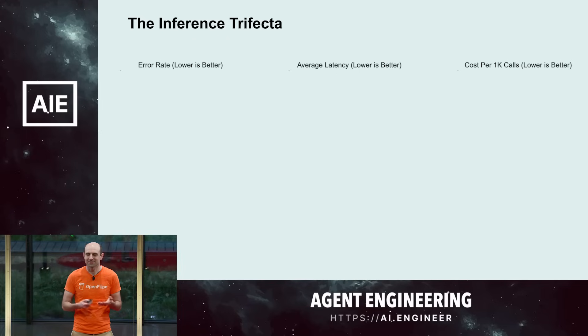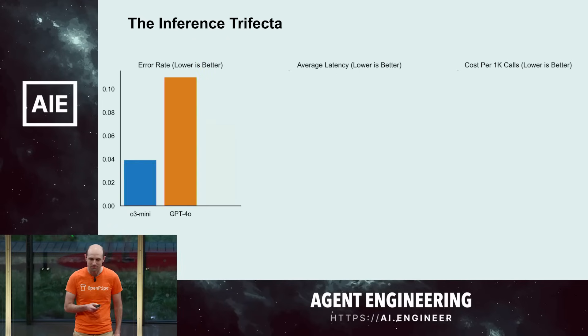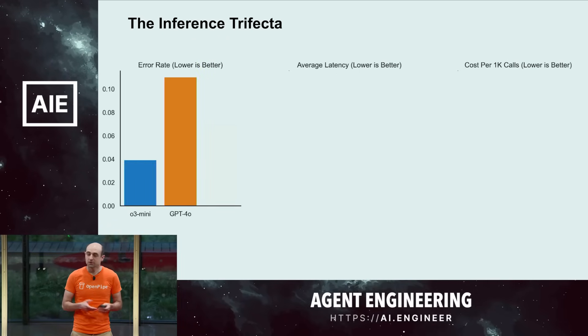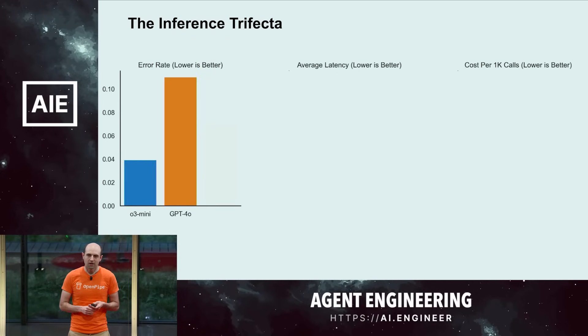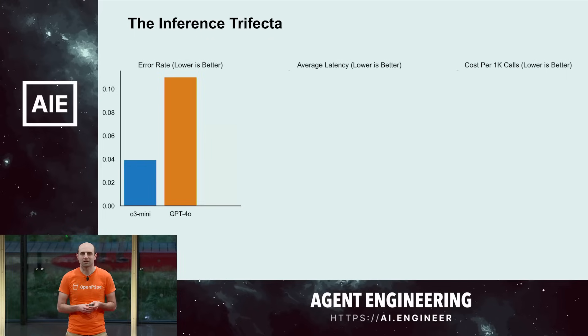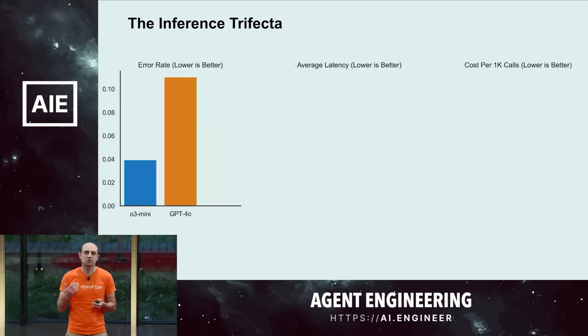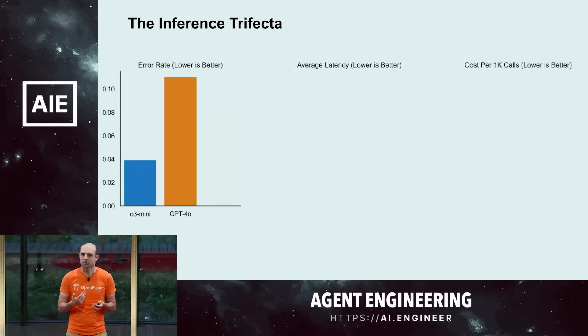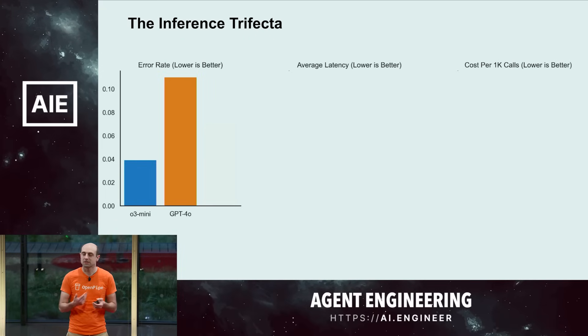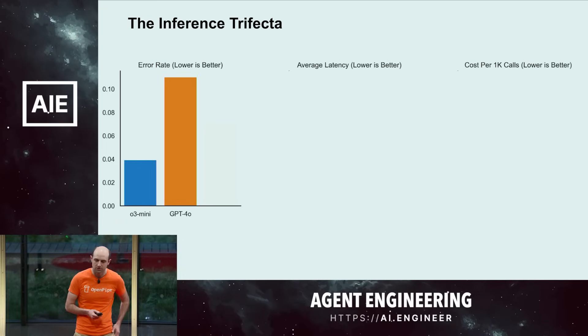The first thing we did was start measuring error rates. Even AI models are not perfect — these are all probabilistic systems, and getting to a zero percent error rate was not really feasible. But we were able to see that different models had different performance characteristics.